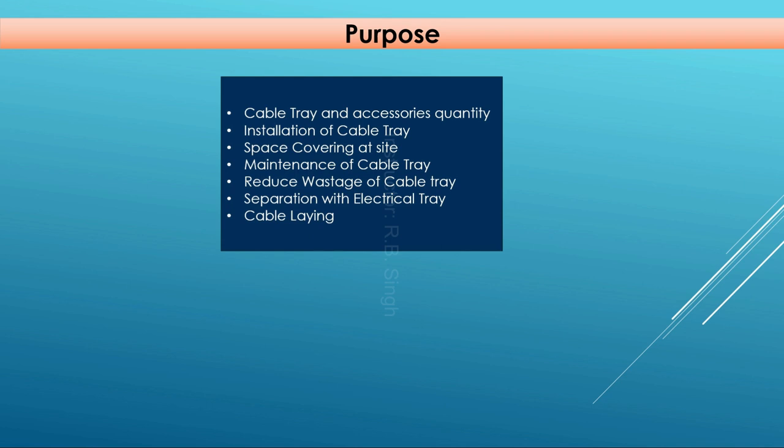Maintenance of cable tray will be done based on this layout, as it shows all routings, sizes, bends, ups and downs, and every accessory. It is a dimensional drawing so maintenance can be planned based on it. Additionally, reducing wastage of cable — if we are working with the help of this drawing, our costing and engineering will be done in a better way, reducing wastage of the cable tray.